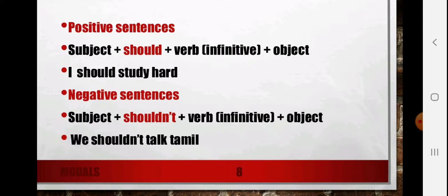Should can be used for positive as well as negative sentences. Positive sentences go as: subject + should + verb + object. Example: 'I should study hard,' 'We should stay home.' Negative sentences: subject + should not (or shouldn't) + verb + object. Example: 'We shouldn't talk Gujarati,' 'We shouldn't go out.' This way I can use 'should' in positive as well as negative sentences.